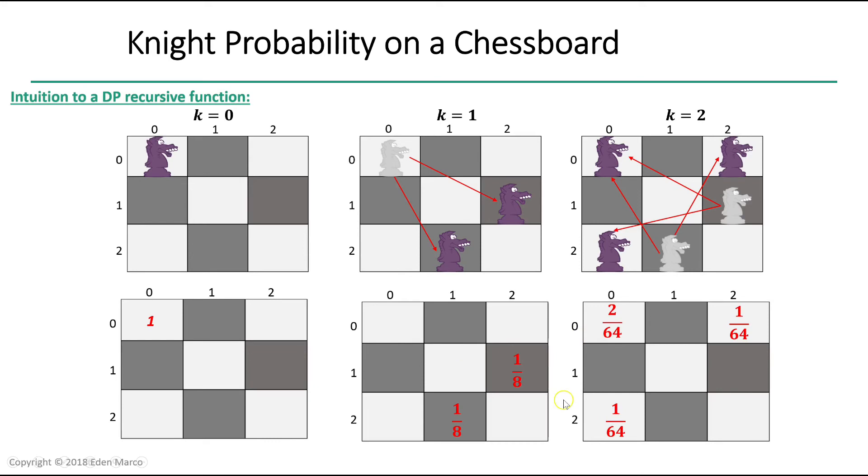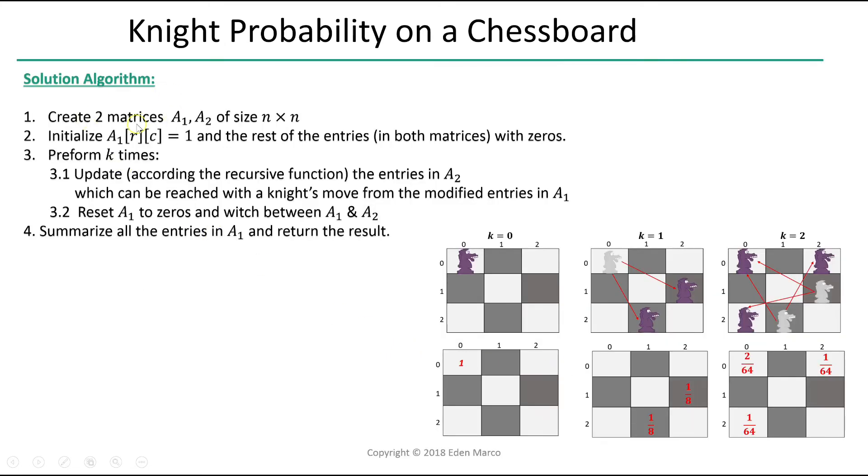We managed to calculate relevant entries with our recursive dynamic programming function f. Now, in order to return the correct output, all we need to do is summarize those entries. Now that we're familiar with everything we need to know to solve this problem, let's write the algorithm.